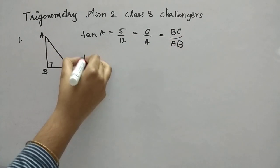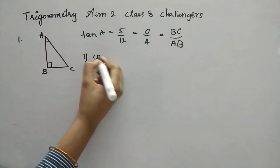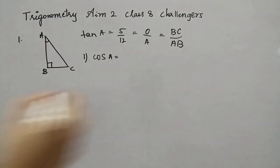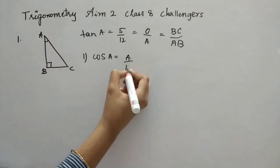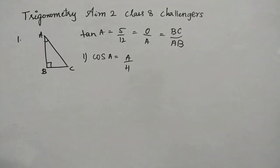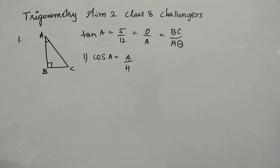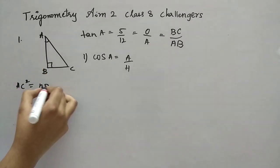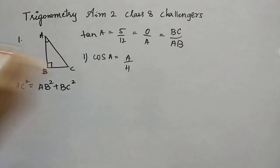Now first one we have to find cos A. What is the formula of cos A? It is A by H, adjacent by hypotenuse. So hypotenuse we don't know. So we have to find using Pythagorean theorem. So let's do that first. AC square, let's see.